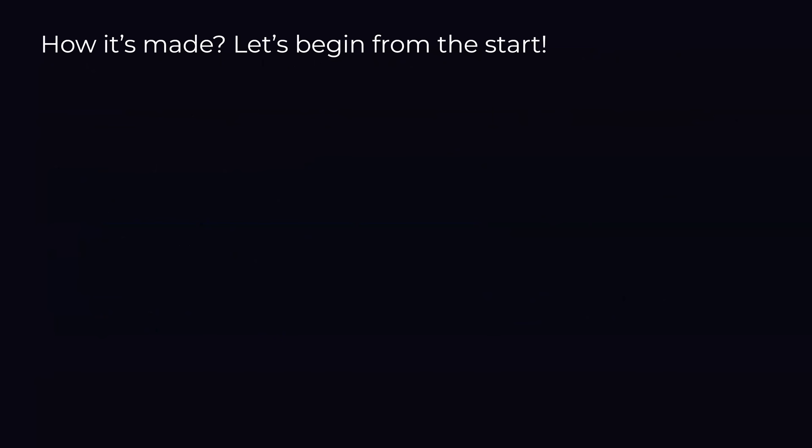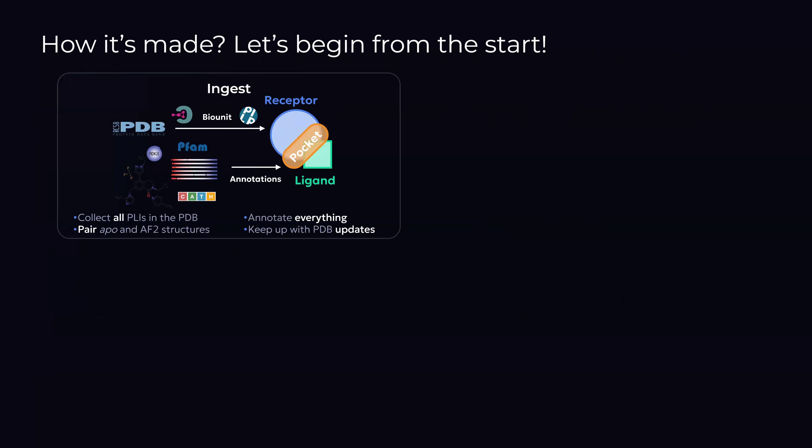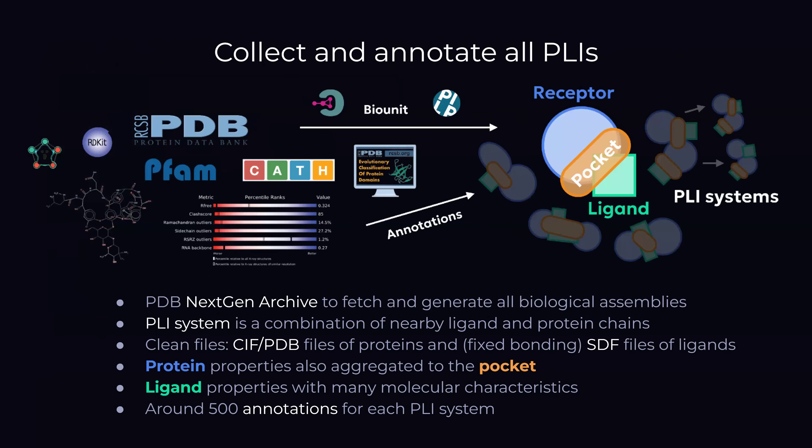Let's see how PLINDER is made. PLINDER takes the PDB next-gen archive that is deposited at regular time intervals. It takes the annotations present in the CIF files to generate biological assemblies. From there, we extract the PLI systems — protein ligand systems — which include ligands as we recognize them, and protein chains within a certain distance. Our current cutoff uses six angstroms. We build the systems as individual files that are cleaned up and saved into receptor CIFs, and we still provide the PDB for those who want to use it.